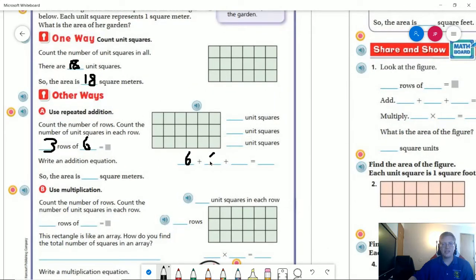So I can use repeated addition and I can count my three rows of six to get six plus six plus six. I'm sorry, it's just three sixes. So six plus six plus six, and that gives us 18.